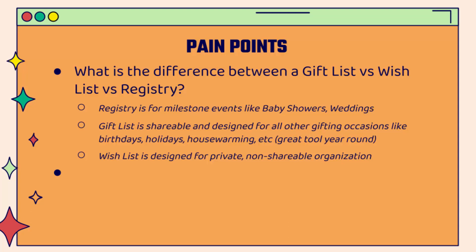Registries are for milestone events — baby showers, weddings — once-in-a-lifetime occasions. Gift lists are shareable and designed for other gifting occasions: birthdays, holidays, housewarming events — things that happen year round, multiple times per year, every single year. That's where a gift list comes in. The difference between a gift list and a wish list is that a wish list isn't inherently shareable. It's for private organization of products you like inside your account. With a wish list we're missing the shareability and the conversion — the actual purchasing. That's why we like gift lists so much.